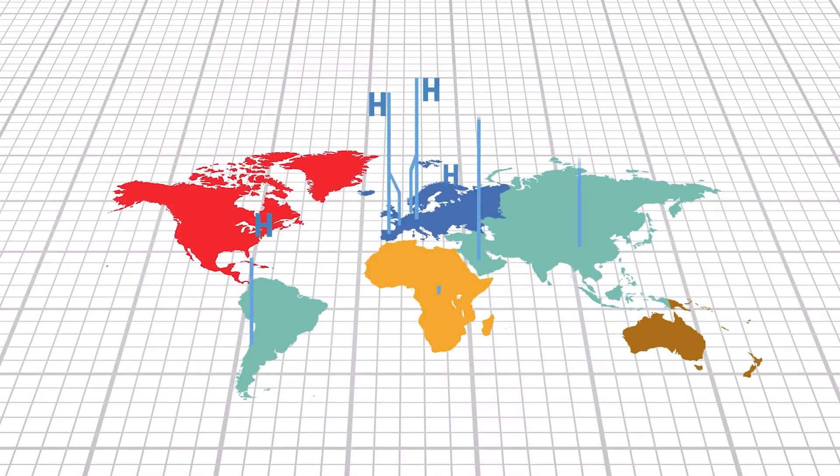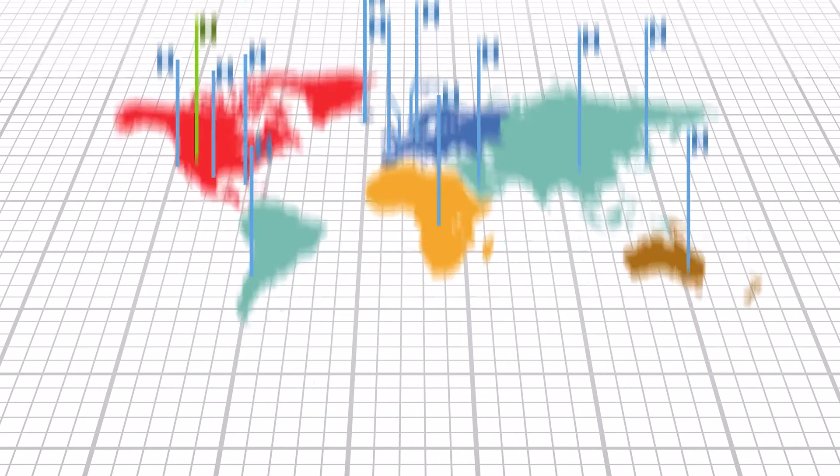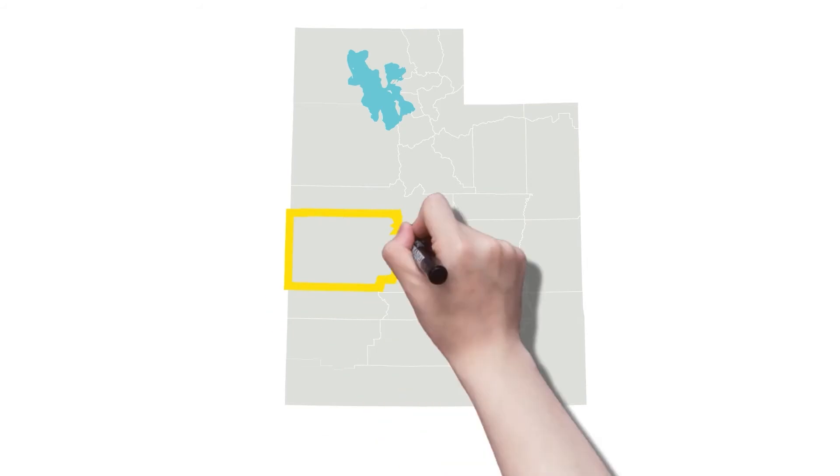Electrolysis costs are plummeting as interest in this green hydrogen is rapidly spreading around the world. And the Intermountain Power Project is an ideal location to deploy the concept at a significant scale.